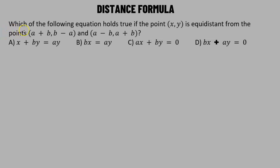Here it is given: which of the following equations holds true if the point x comma y is equidistant from two given points? Let's try to understand it graphically first.